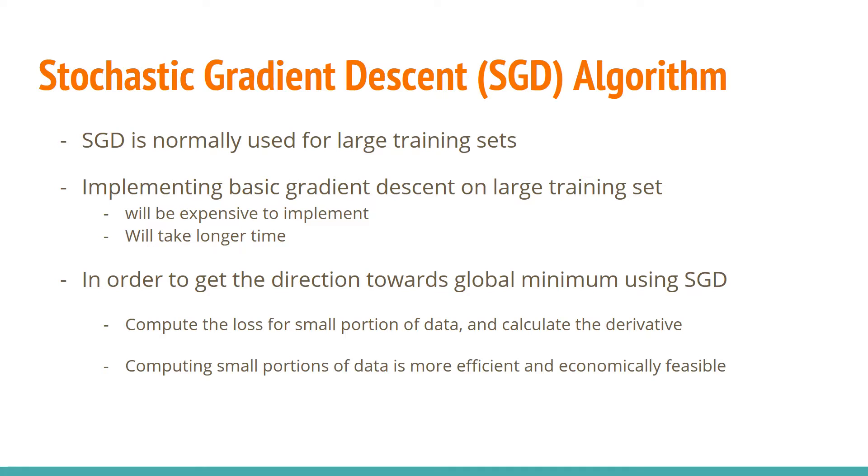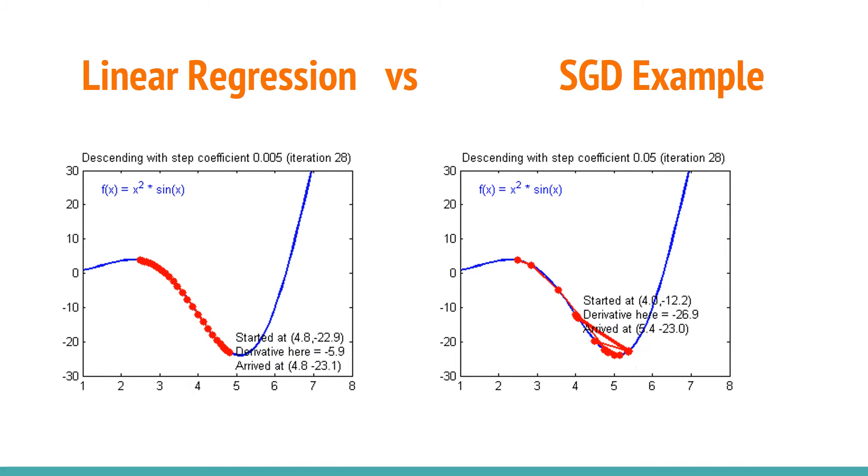The goal for using stochastic gradient descent is to start making progress even after one single example or iteration. Stochastic gradient descent does not scan through the entire training set, which makes it even more efficient. To compute the loss for small portions of data, we have to calculate the derivative, and that will lead towards the next point we should plot on the graph. Computing small portions of data is more efficient and economically feasible. To check convergence, compute the cost function first, and usually it's done before updating the theta, and implement iterations for every thousand or so iterations. We need to plot these costs computed from the previous step.